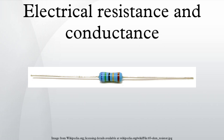Energy dissipation and Joule heating: Resistors oppose the flow of electric current, therefore electrical energy is required to push current through the resistance. This electrical energy is dissipated, heating the resistor in the process. This is called Joule heating, also called ohmic heating or resistive heating. The dissipation of electrical energy is often undesired, particularly in the case of transmission losses in power lines. High voltage transmission helps reduce the losses by reducing the current for a given power. On the other hand, Joule heating is sometimes useful, for example in electric stoves and other electric heaters. As another example, incandescent lamps rely on Joule heating — the filament is heated to such a high temperature that it glows white hot with thermal radiation. The formula for Joule heating is P = I²R, where P is the power converted from electrical energy to thermal energy, R is the resistance, and I is the current through the resistor.